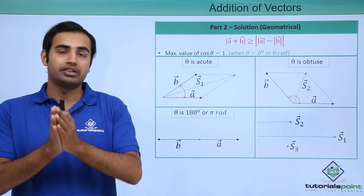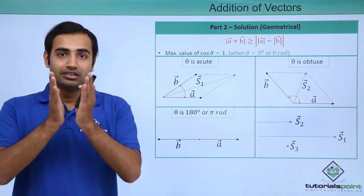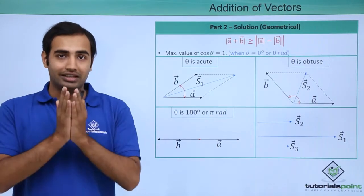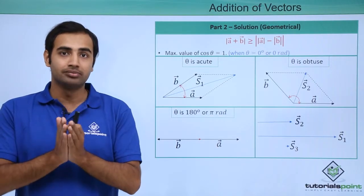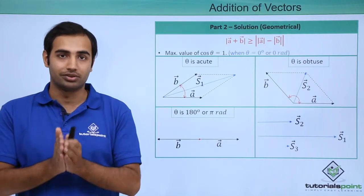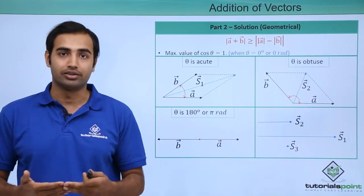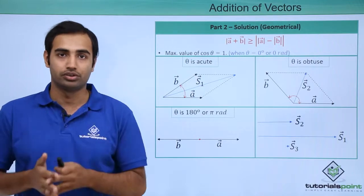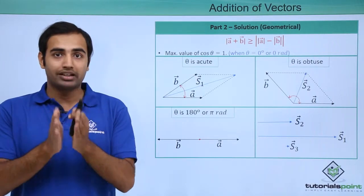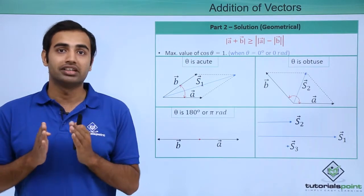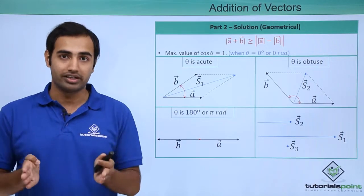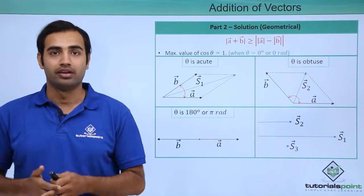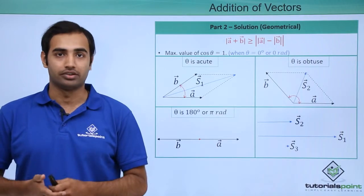To recap the entire idea: the magnitude of the resultant obtained after adding two vectors is maximum when the angle between the vectors is 0 radians, and that maximum value is mod A plus mod B — the sum of the original two magnitudes. The magnitude of the resultant is minimum when the angle between the two vectors is pi radians, and its value is mod A minus mod B.